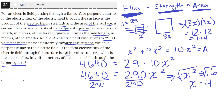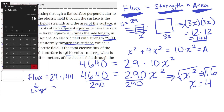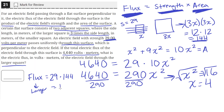In order to find the total flux through the large square, we need to multiply the area by the strength. The strength is still 29 volts per meter. So the flux through the larger square is just 29 volts per meter times the area, which is 144. That equals 4,176 volt meters. So 4,176 is the correct answer.